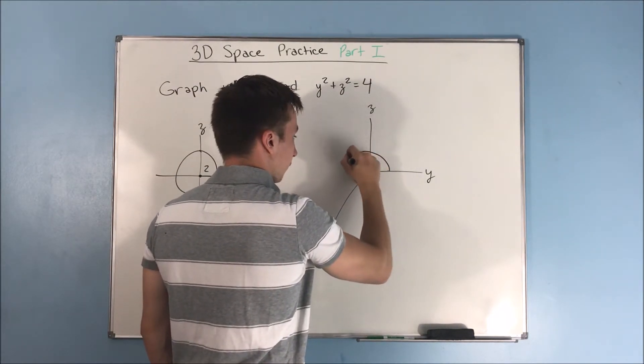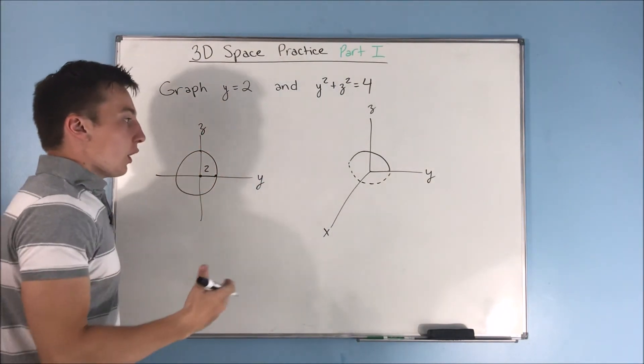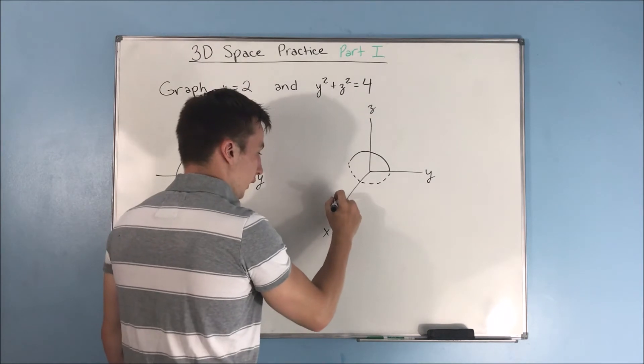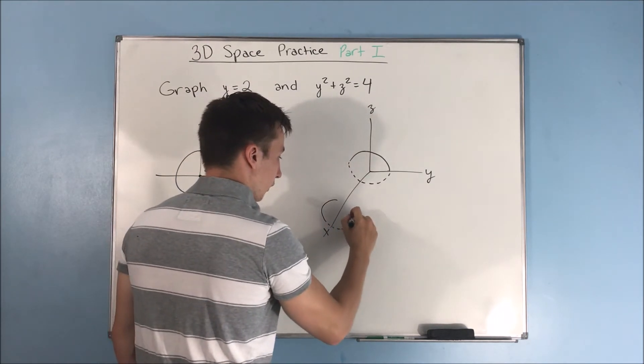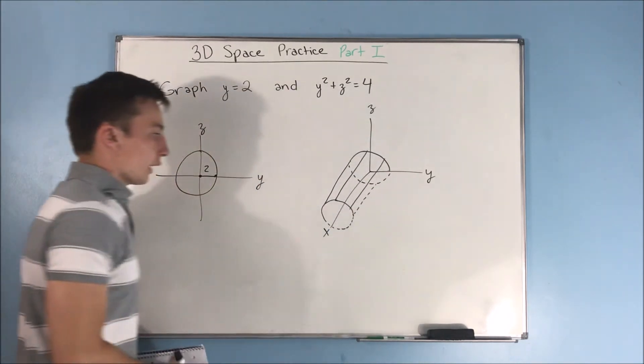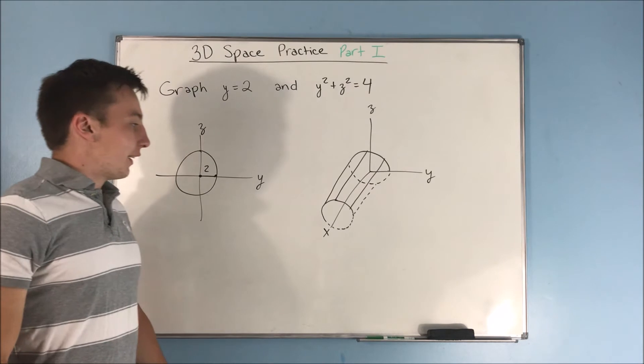So you can kind of illustrate it as such. But now we can extrude this in the x direction. So we get something like this. We get a cylinder. That's what this is supposed to be.